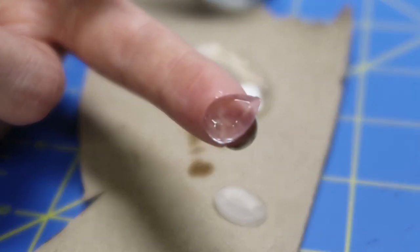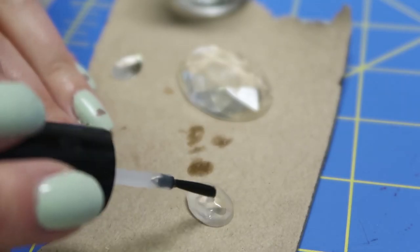I used three gems for my Sailor Padme, one for the crown, one for the choker, and one for the front bow. Once the clear polish was dry, it was time to color the gems.